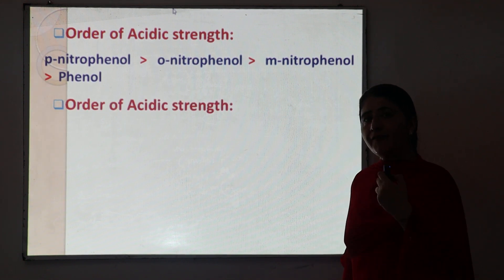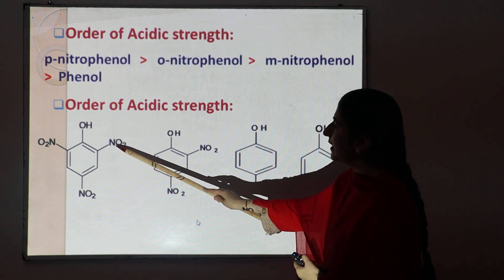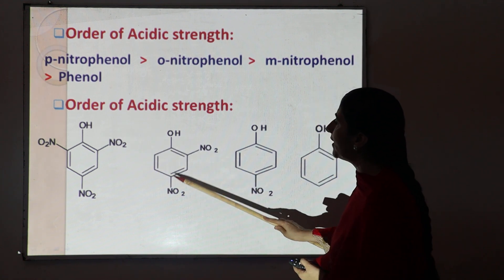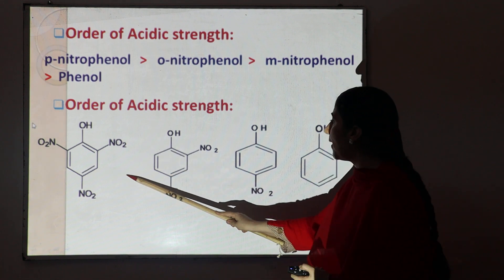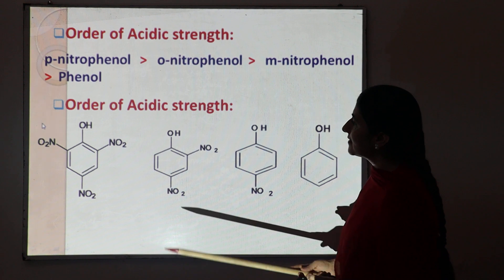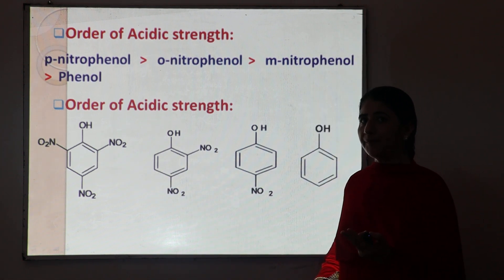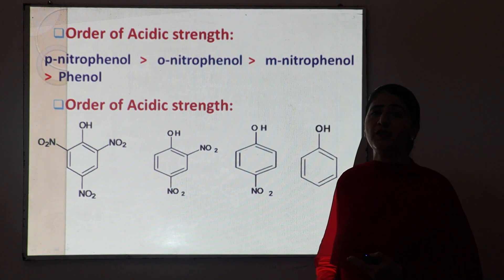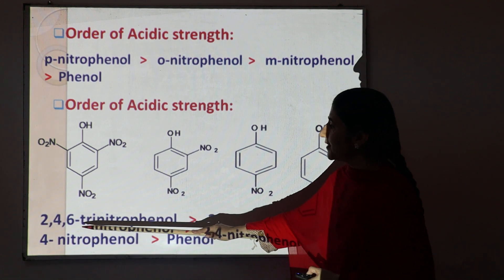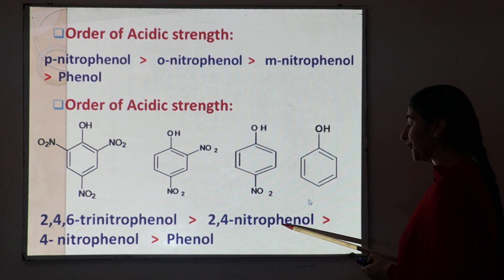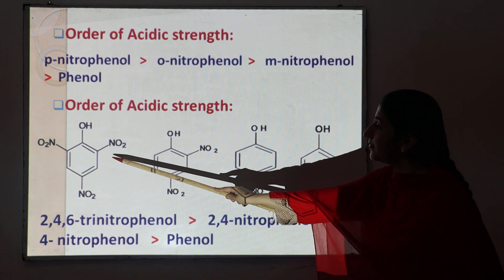Next is the effect of the number of substituents on the acidic nature of phenol. For example, arranging 2,4,6-trinitrophenol, 2,4-dinitrophenol, 4-nitrophenol, and simple phenol in decreasing order of acidic strength: since nitro is an electron-withdrawing group, a greater number of nitro groups decreases the negative charge on the oxygen of phenoxide to a greater extent, making phenoxide more stable and increasing acidity. So the decreasing order is: 2,4,6-trinitrophenol > 2,4-dinitrophenol > 4-nitrophenol > phenol.